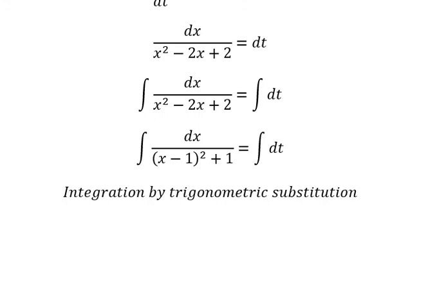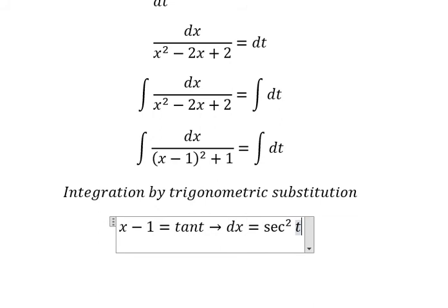So we put about x minus one equals to tan t, dx equals to secant of t squared dt.